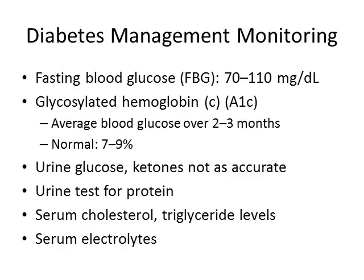The hemoglobin A1C test allows us to say: your blood sugar might be great today in the office, but I can see how you've been managing it over the past two to three months, and I can see that it's been elevated.